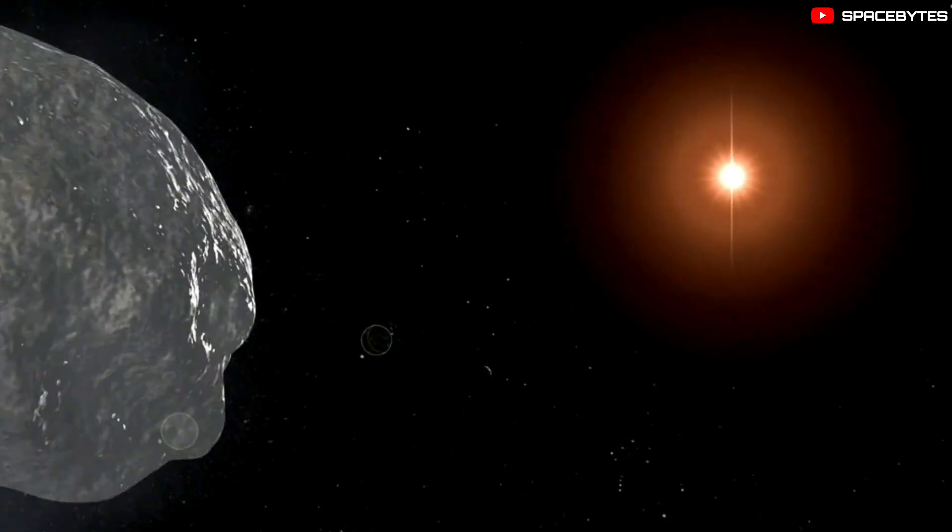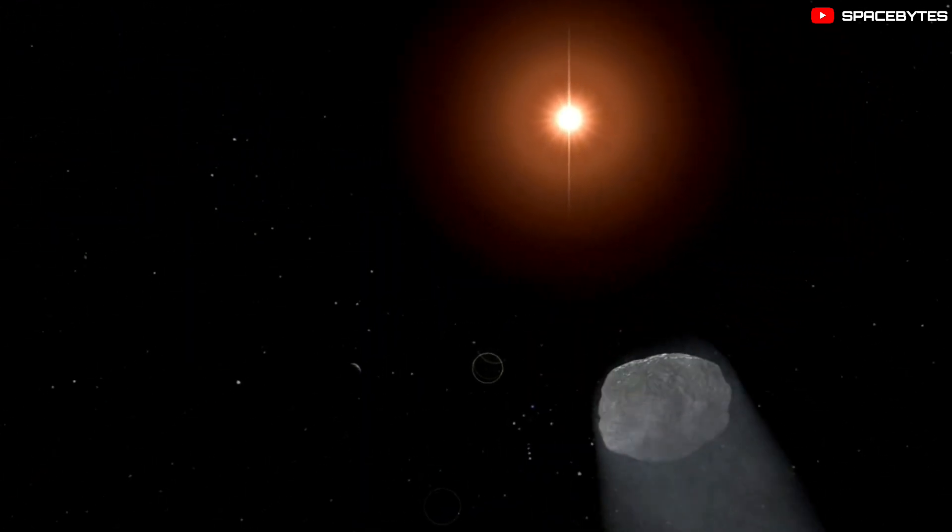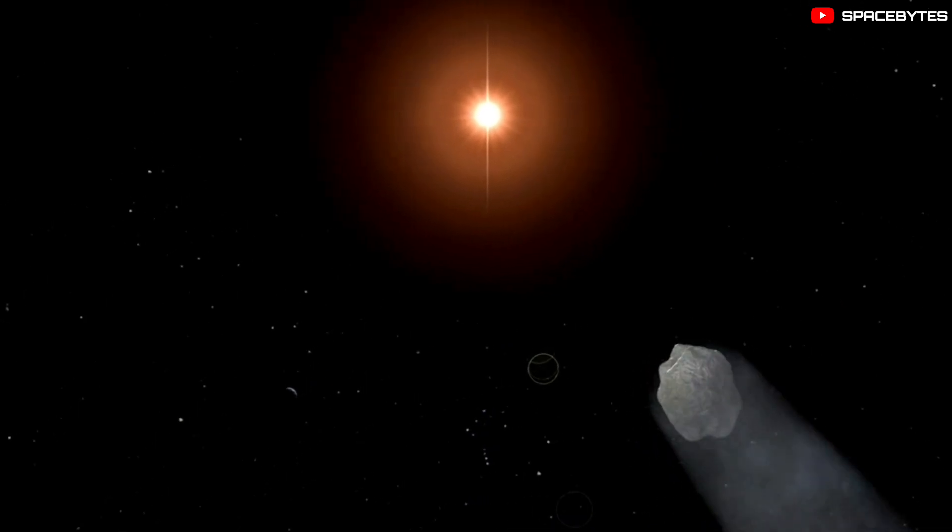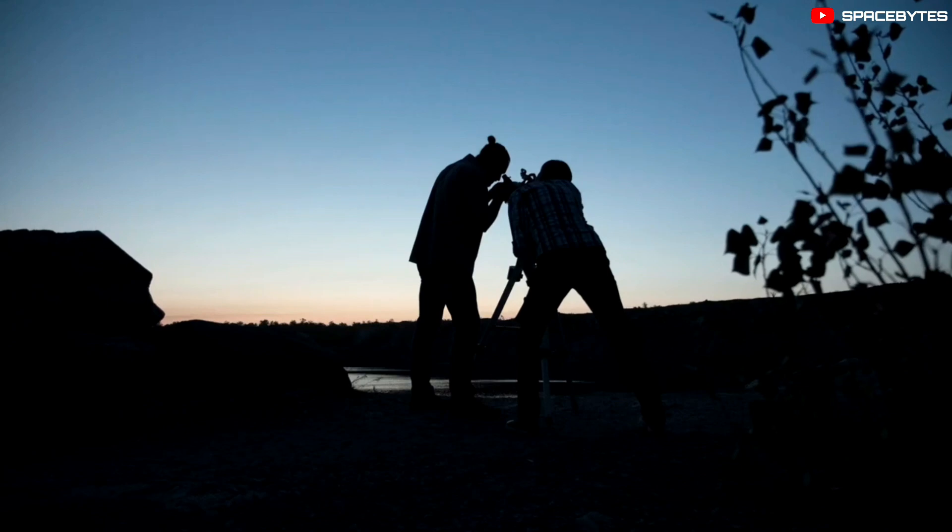The 2022 OE2 is an Apollo-class asteroid, which orbits the Sun and crosses the path of Earth's orbit. It was first observed this year, which is indicated by 2022 in its name.